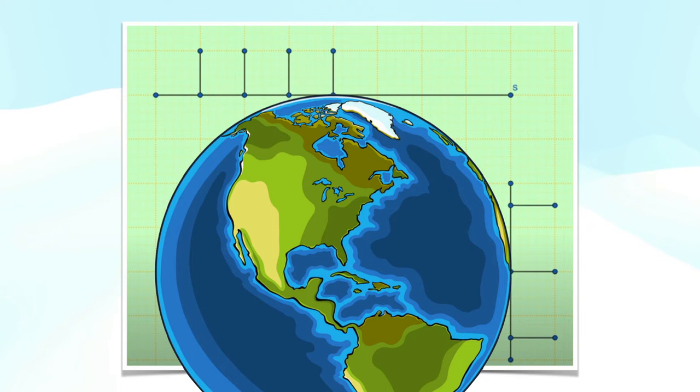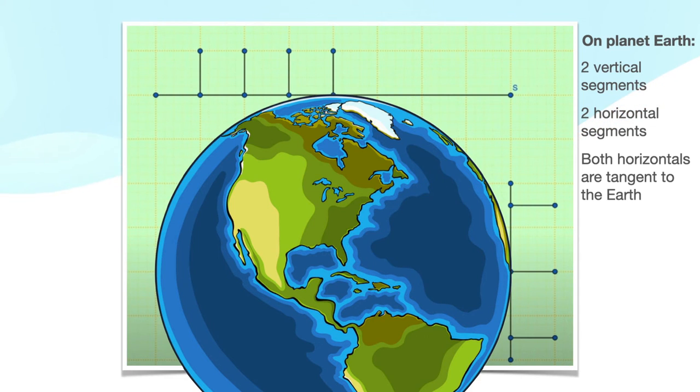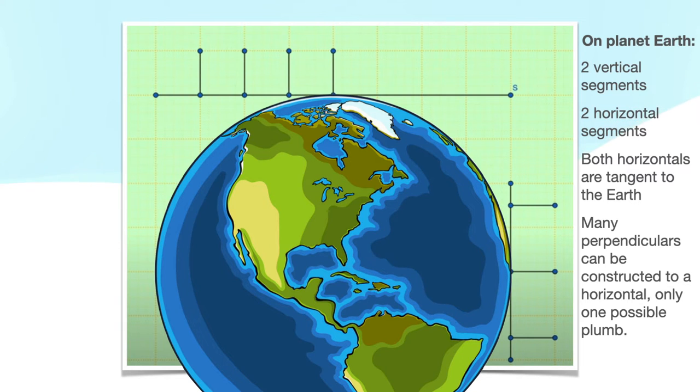Brian then talked about the circle as being planet Earth. Now, there are only two vertical segments and two horizontal segments, both of which are tangent to the Earth. While many perpendiculars can be constructed to a horizontal, only one of these can be plumb.